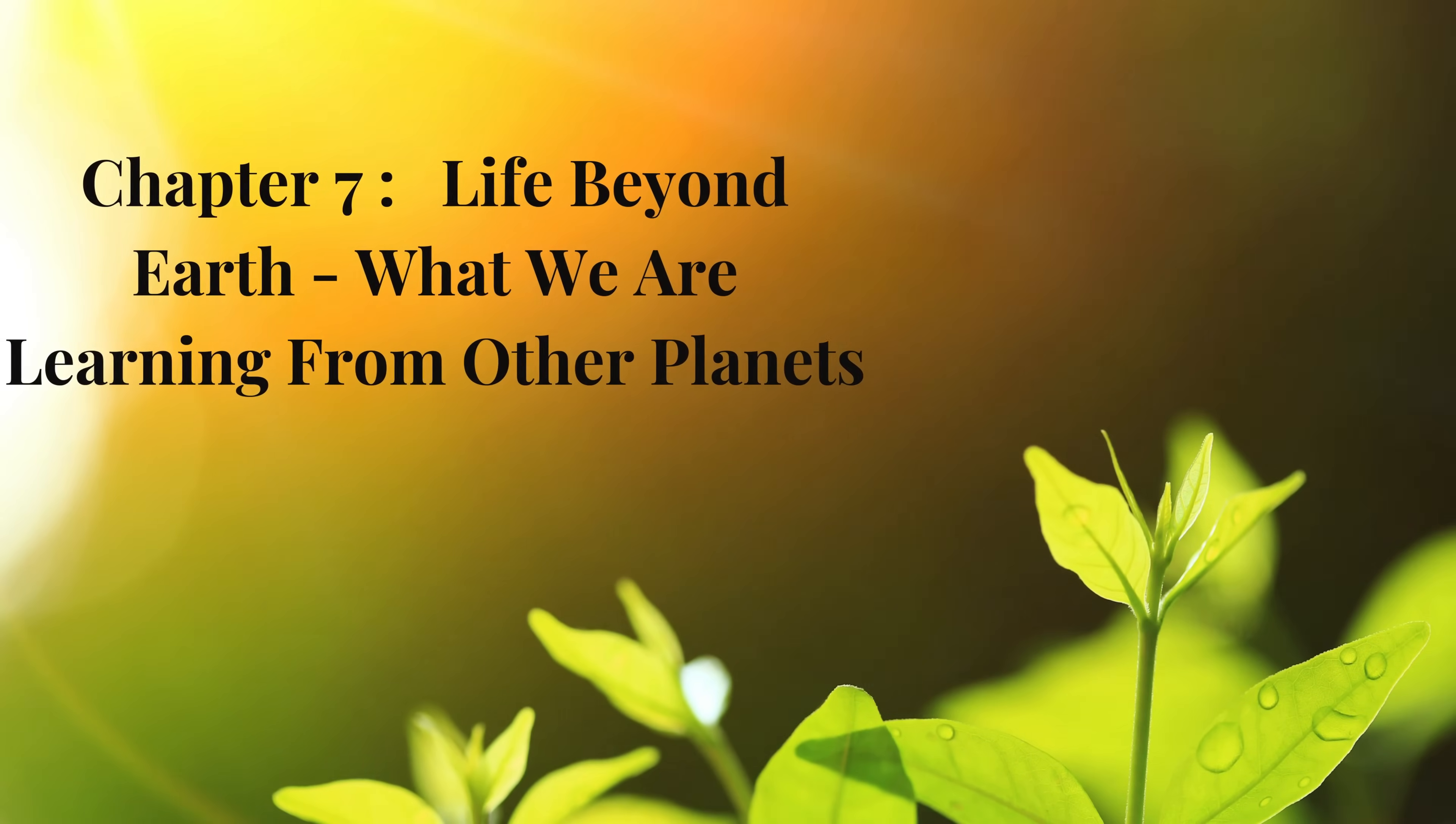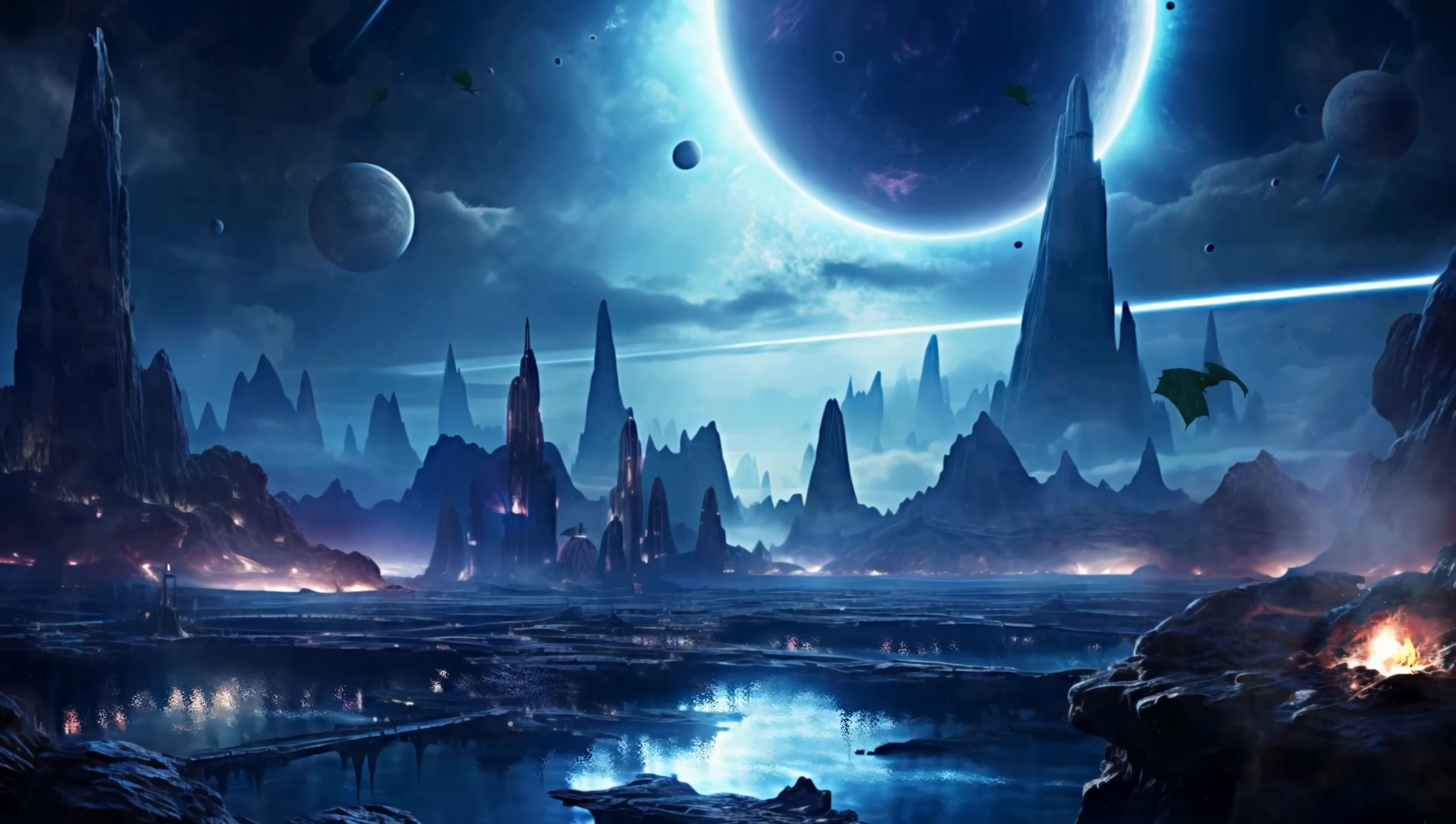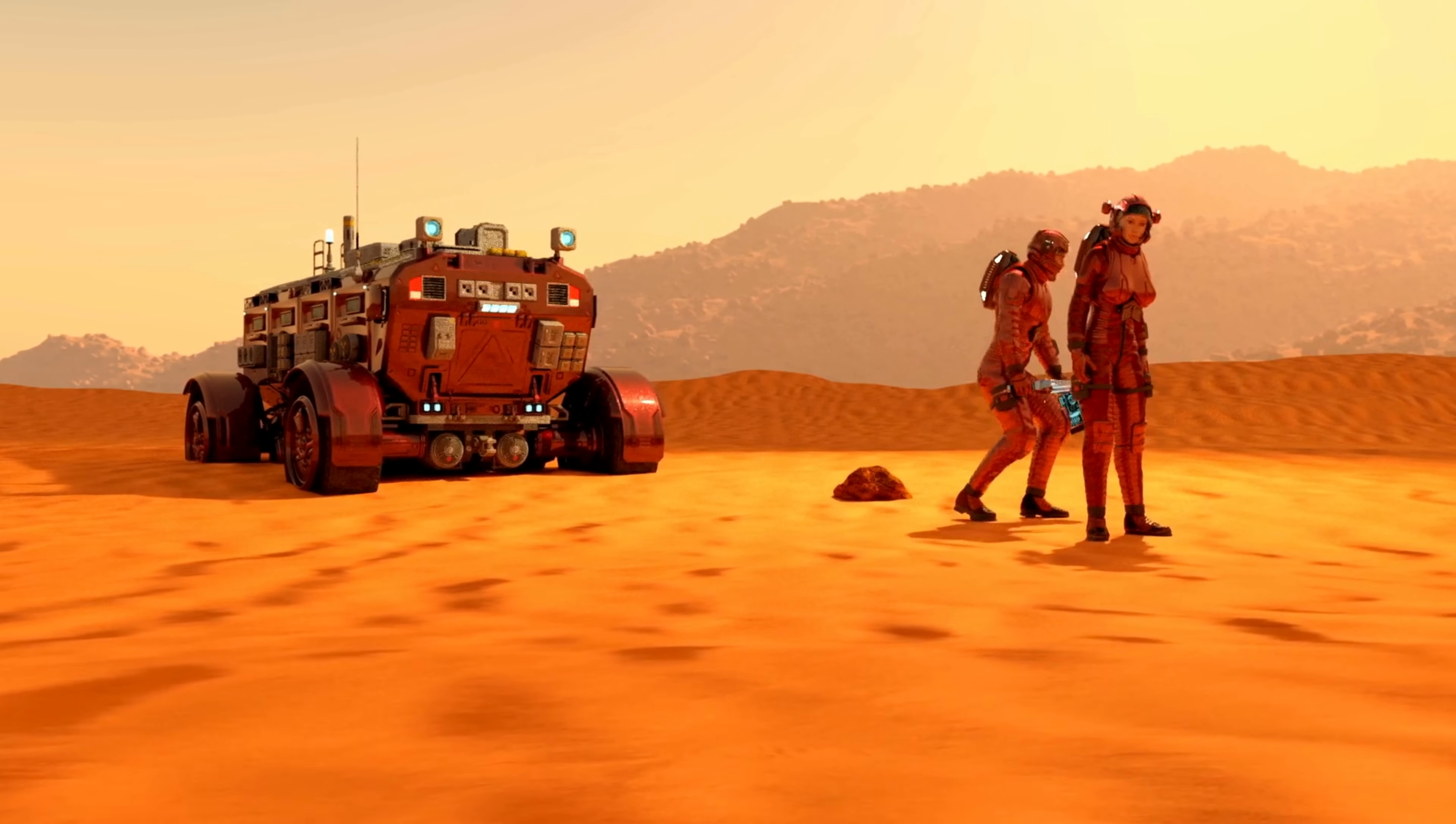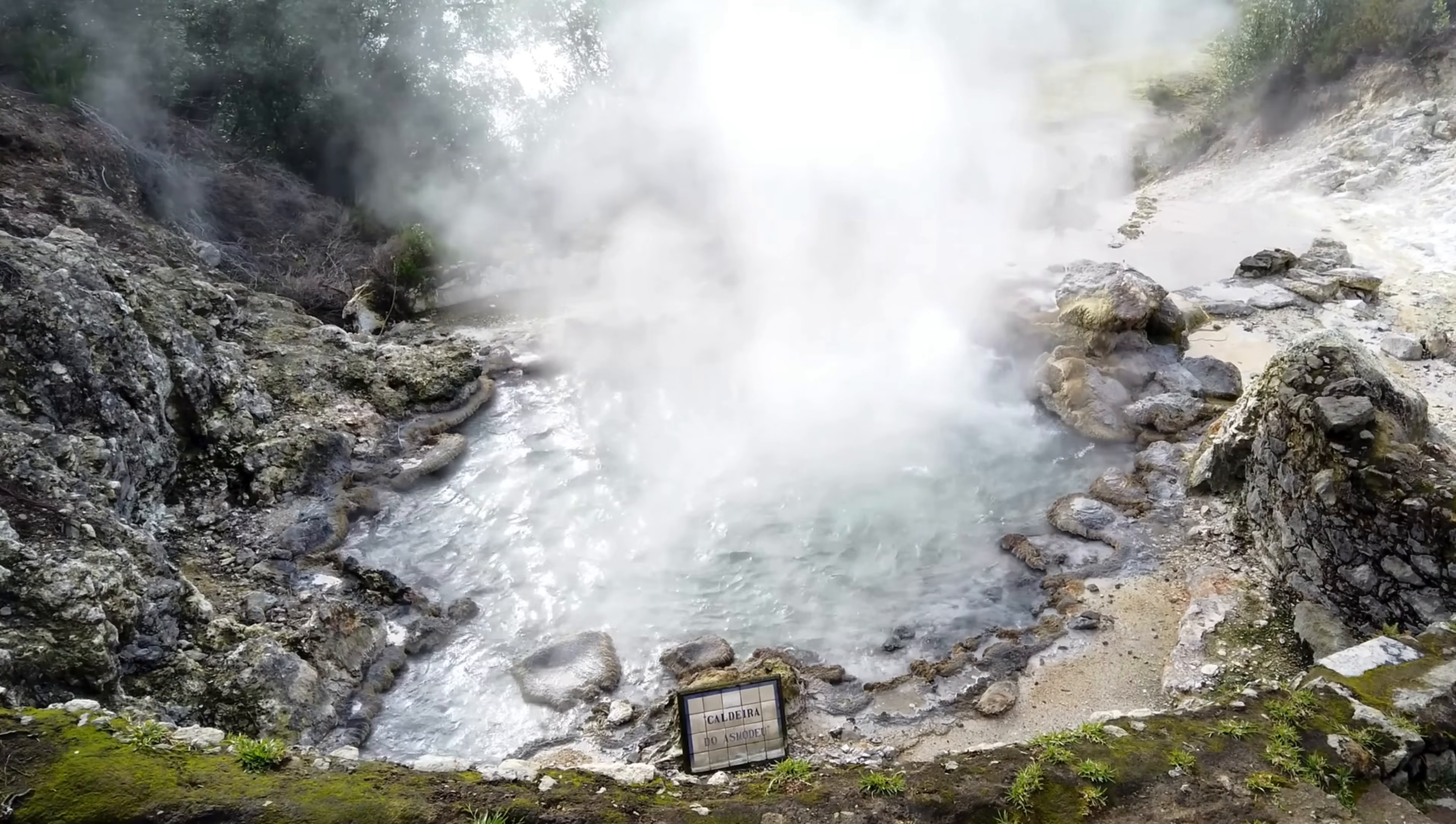Chapter 7: Life Beyond Earth - What we're learning from other planets. Understanding how life began on Earth opens up another exciting question: Could life exist elsewhere in the universe? With each new discovery, scientists are uncovering clues that suggest life might not be unique to Earth. Mars, for example, may have had liquid water in the past, and researchers are still studying the red planet for signs of ancient life. Europa and Enceladus, moons of Jupiter and Saturn, have subsurface oceans under icy crusts. And scientists wonder if hydrothermal vents could exist there, similar to those on Earth.